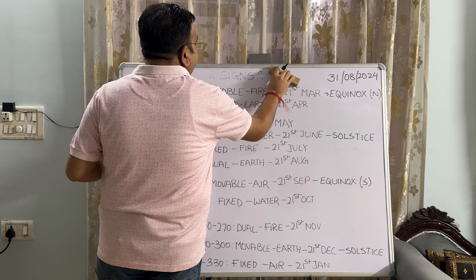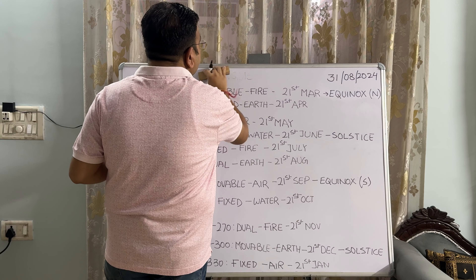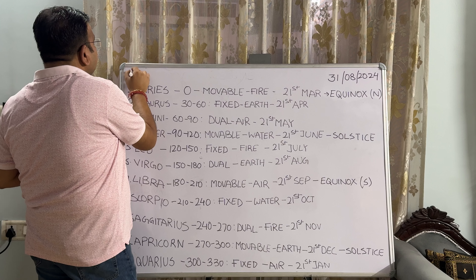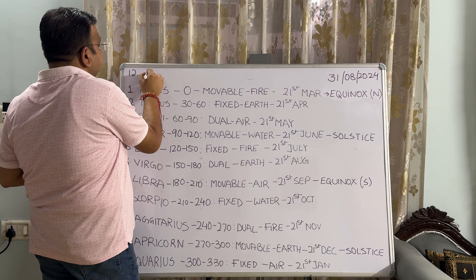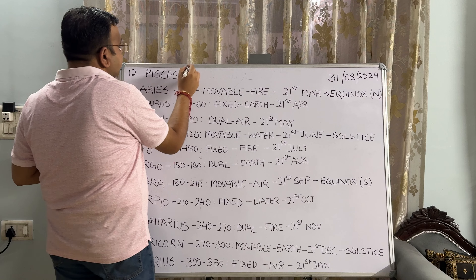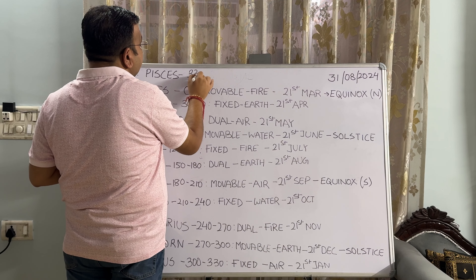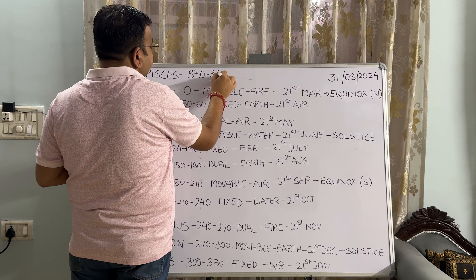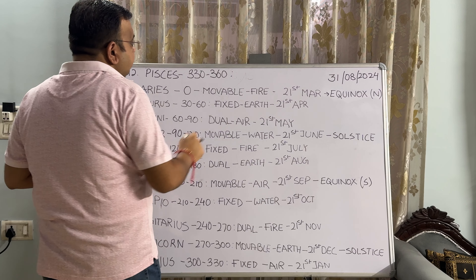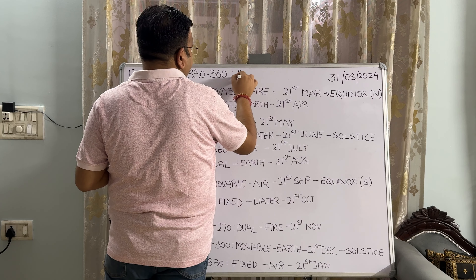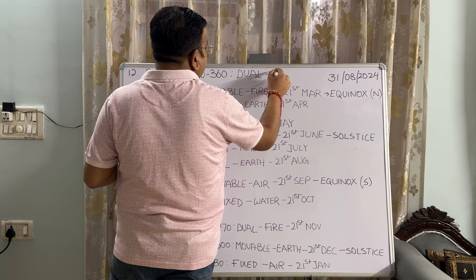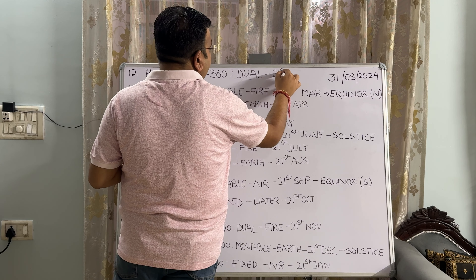There is one more sign, which is Pisces. The twelfth sign is Pisces — it extends from 330 degrees to 360 degrees and it is dual in nature, and the sun enters it around the 21st of February.